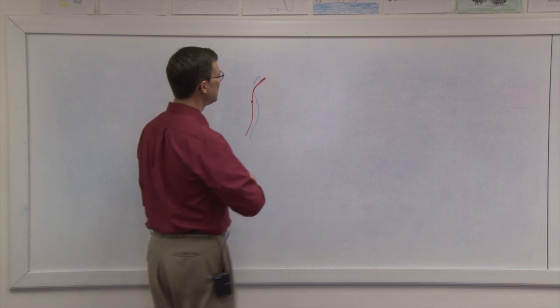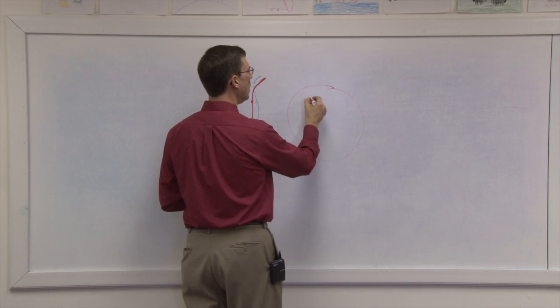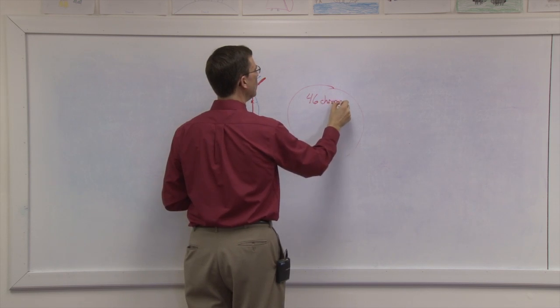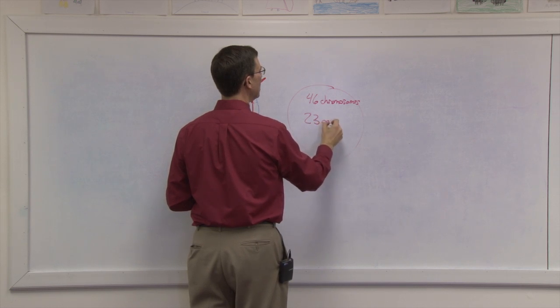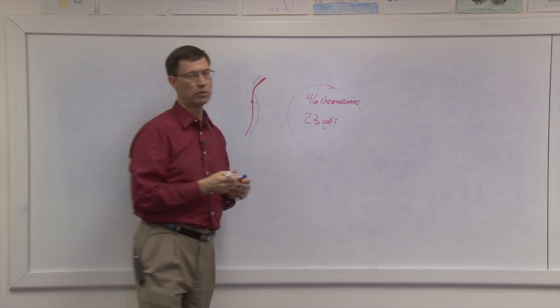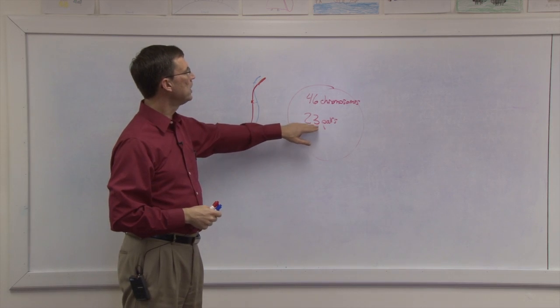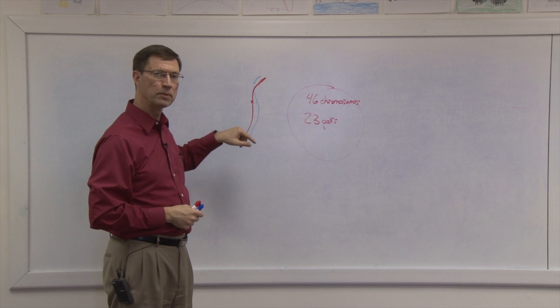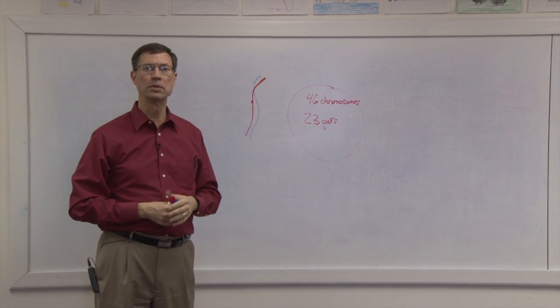And so this is why we say that in every cell nucleus, there are 46 chromosomes and 23 pairs of chromosomes. So 23 of the 46 chromosomes, they're blue, came from dad. 23 of the 46 chromosomes came from mom.